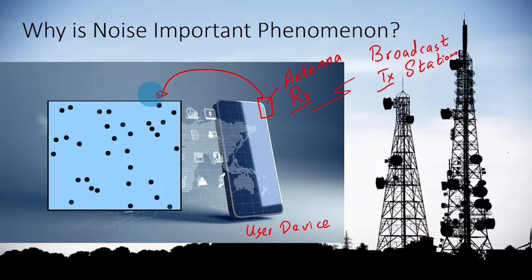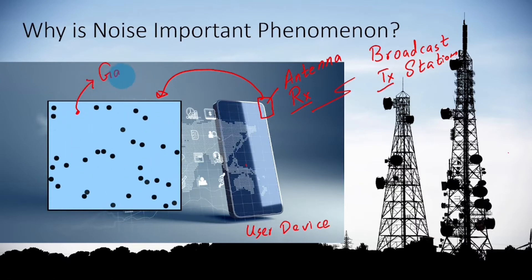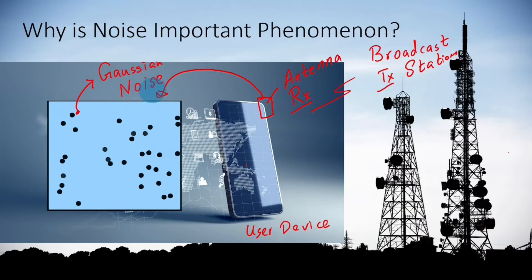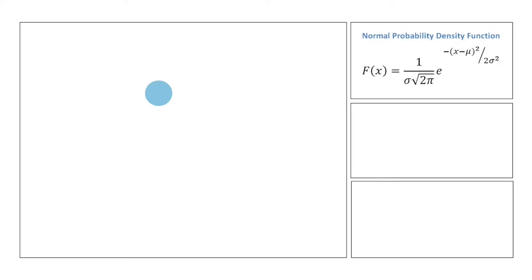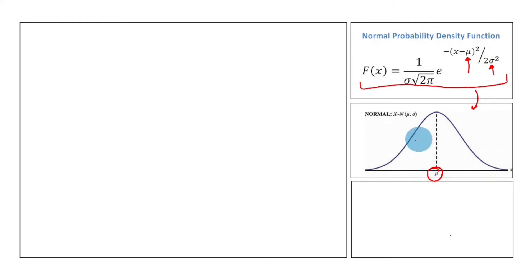The emerging signal is often a Gaussian noise, which has a probability density function given by the expression shown here, along with its corresponding plot. Here mu is the mean value or average value, sigma is the standard deviation, and sigma squared is the variance.